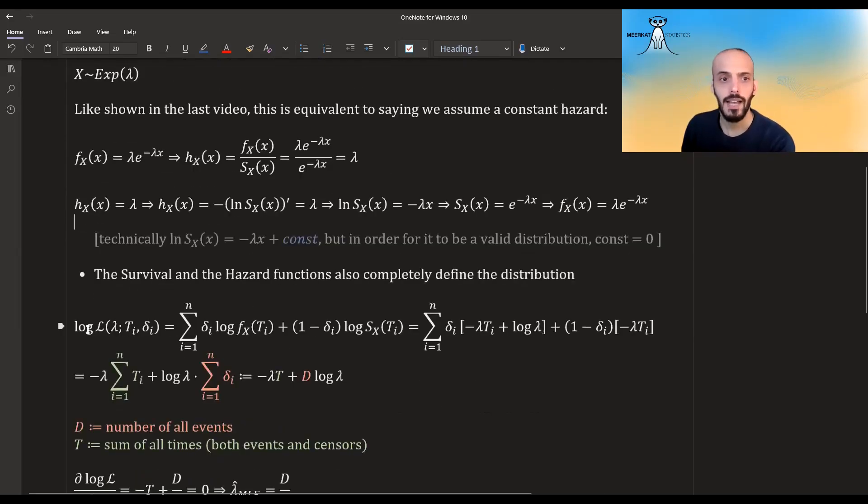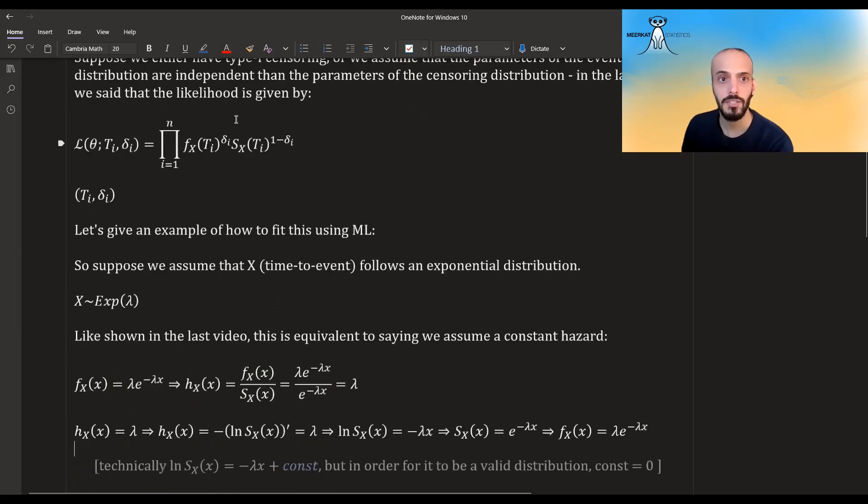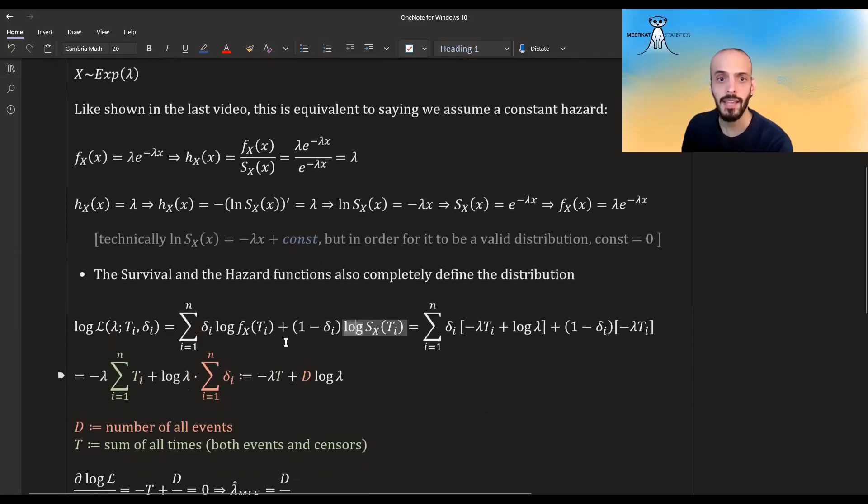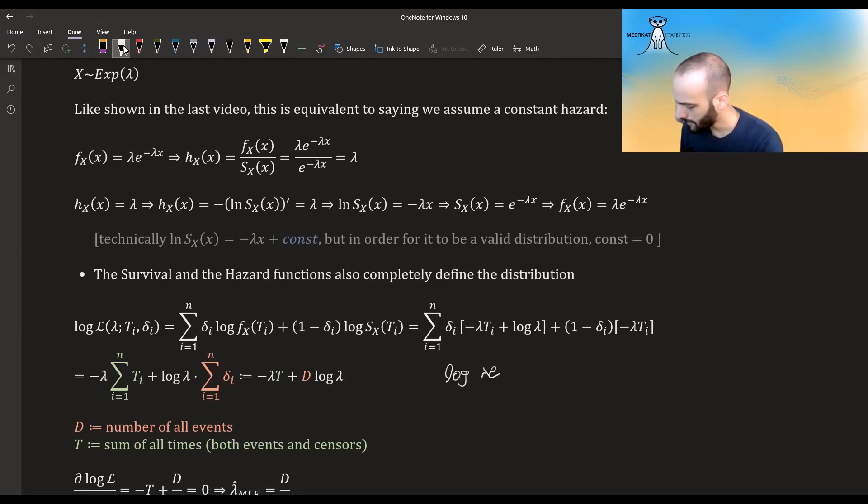Okay, so how do we do the maximum likelihood? We take the log likelihood. We take the log of this expression over here and it just decomposes into this, and then we just plug in what is the pdf and what is the survival function. The log of the pdf is just given by this for an exponential distribution, and the survival function log is given by this. The log of lambda e^(-lambda*x) is just log(lambda) minus lambda*x, and instead of x we have t here.